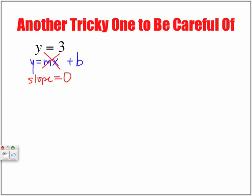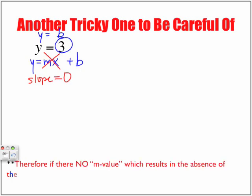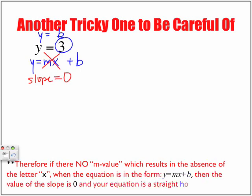So, which means that Y is really equal to our B value. And our B value is that number, in fact, right there. So, that B value, which is our Y intercept, in this example, the Y intercept is 3. So, therefore, if there is no M value, which results in the absence of the letter X, when the equation is in the format Y is equal to MX plus B, then the value of the slope is 0. And your equation is a straight horizontal line.